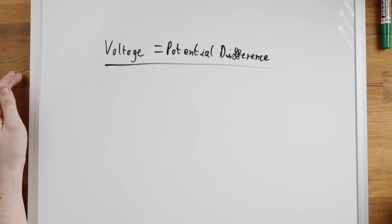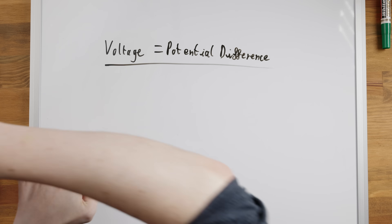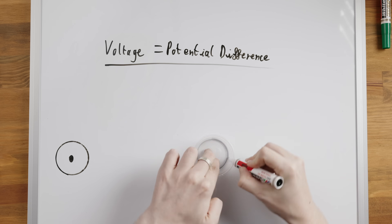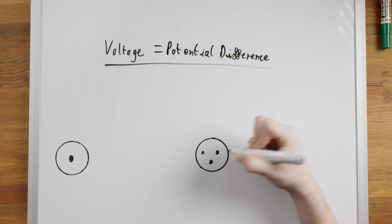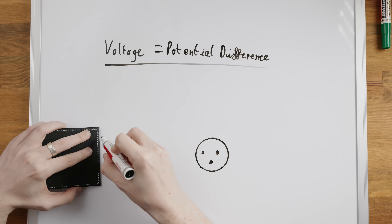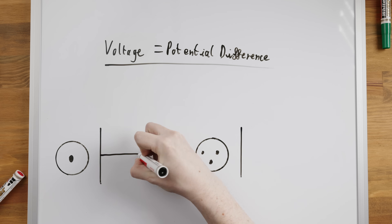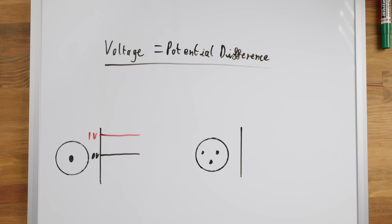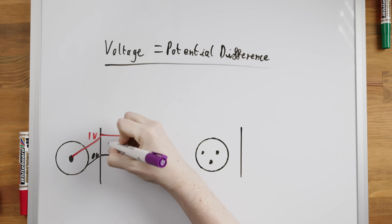A bit of electronics 101: voltage is a potential difference between two points and so it has to be referenced to something. In a single-ended RCA connection, this is the positive signal level referenced to ground, which is the zero volts reference point.